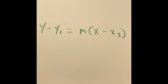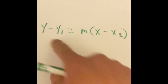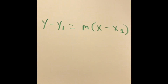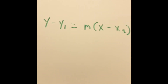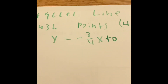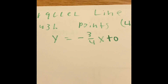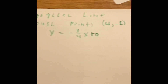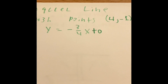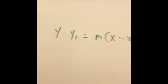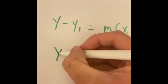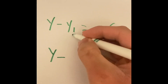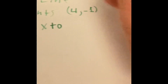The main goal of point slope form is to turn it into a new slope intercept form, which will be parallel to y equals negative 3 over 4 x plus 0. Let's insert the information into the formula. We have y minus y1 — we're going to write y because we want it in slope intercept form — and minus y1, we put our first y, which is negative 1.